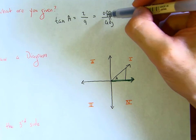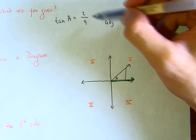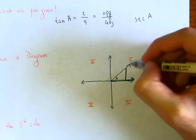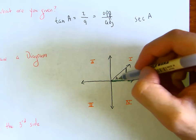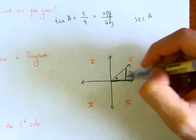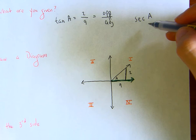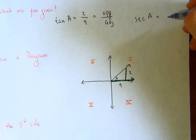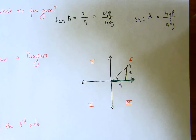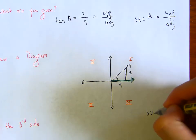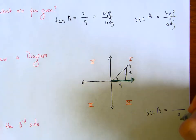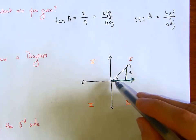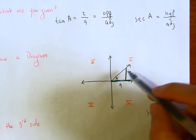We know tangent of a is 2 over 9. What do you know about tangent? Tangent is opposite over adjacent. So for this angle a, the opposite side is 2 — the distance from here to here is 2. The adjacent side — the distance from here to here — is 9. Now what do you need for secant of a? Check your notes: secant of a is hypotenuse over adjacent. We have the adjacent, which is 9 on the bottom. What are we missing? The hypotenuse.